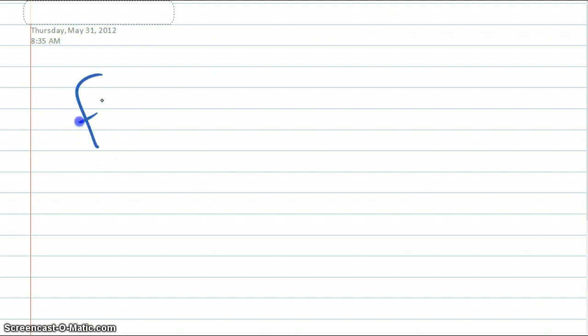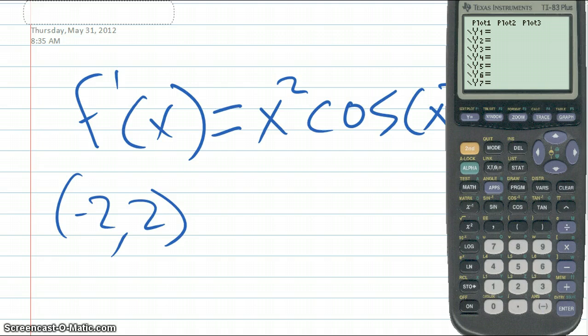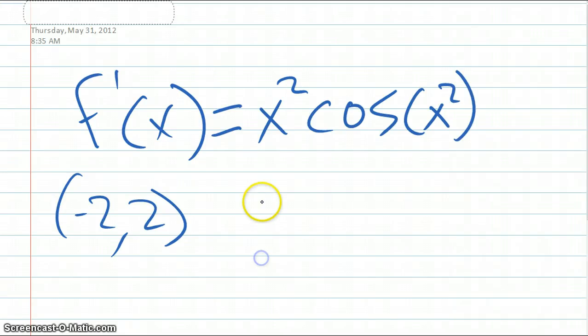Okay, so we have a derivative function, which is f prime of x equals x squared cosine of x squared, and it asks how many points of inflection does the graph of f have on the open interval, which is negative 2 to 2. So we'll plug in our function, x squared cosine of x squared. And, okay, so this is the graph of f prime, and there are 1, 2, 3, 4, 5 maximums or minimums, so there are 5 points of inflection.